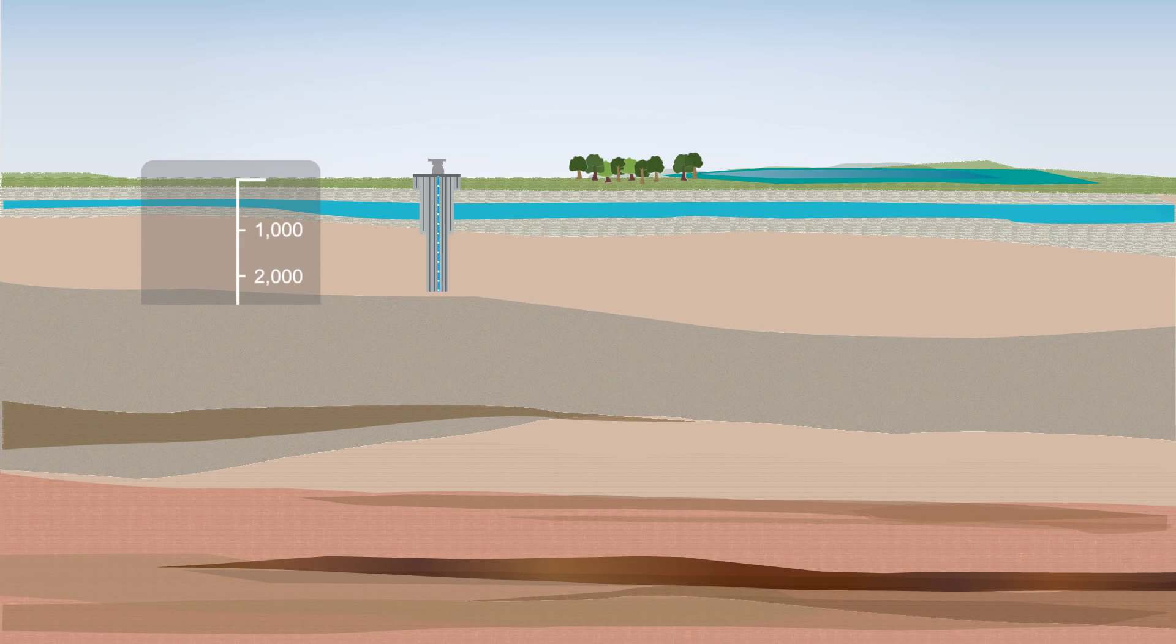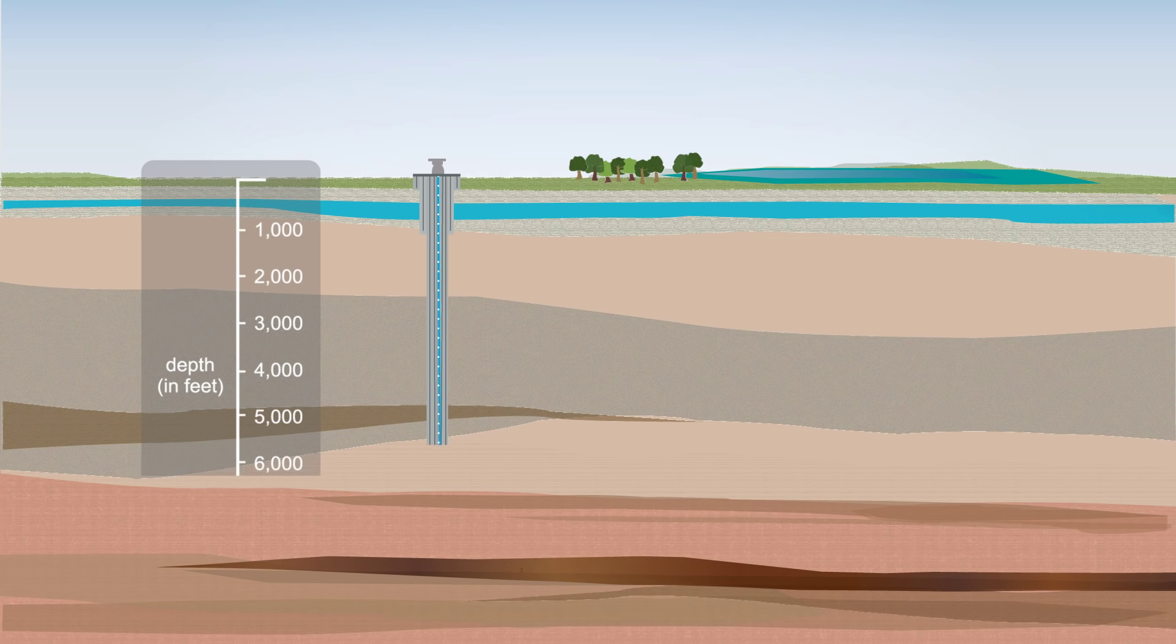Hydraulic fracturing is a process that facilitates the extraction of oil and natural gas by allowing it to flow through shale rock formations that are typically more than a mile below the Earth's surface.